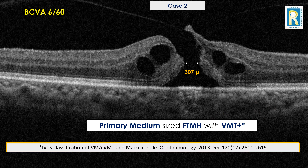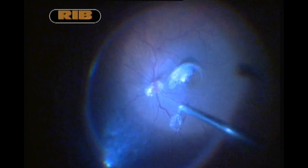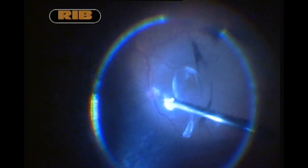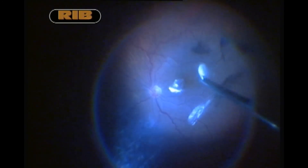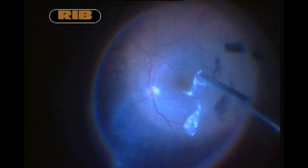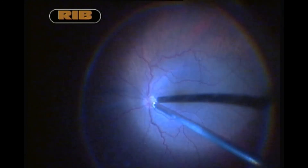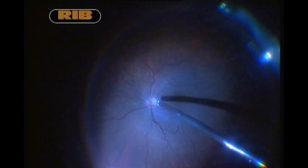Such holes do not close on their own, and just injecting gas or special chemicals may not work. Therefore the best way to treat them is vitrectomy, and just vitrectomy alone is sufficient. We removed the central vitreous, then stained the remaining vitreous with triamcinolone, and with the cutter in suction mode we gently induced a separation between the posterior vitreous and the retina, successfully removing all vitreous inside the eyeball. No further steps were needed.